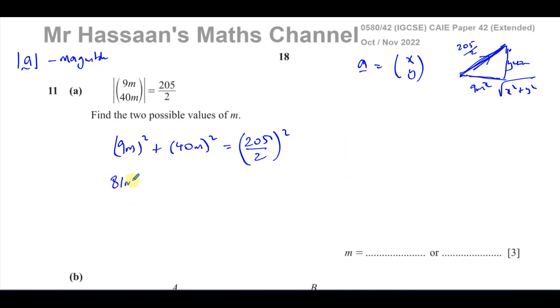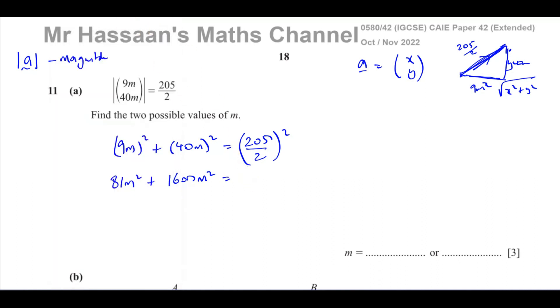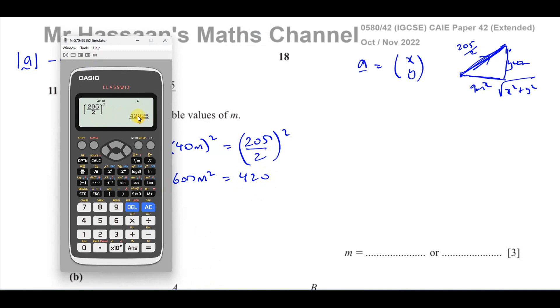So this is going to be 81m squared. Don't forget to square both of the numbers inside here. And 40, if you square it, gives you 1,600m squared. And that's equal to 205... I'll work out what that is. So we have, 205 over 2, and then all squared. That gives me 42,025 over 4.